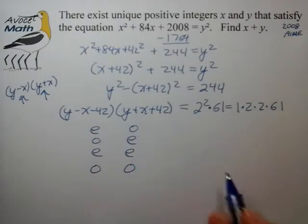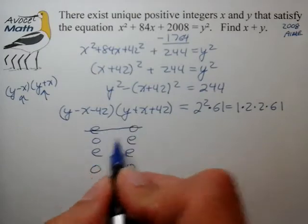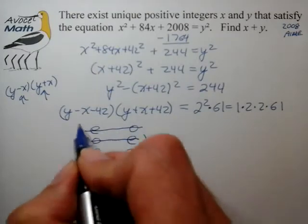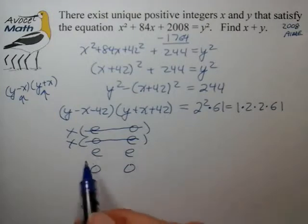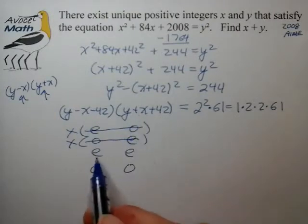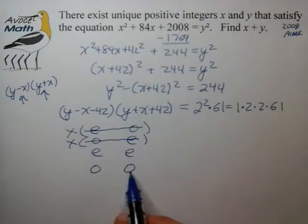So we know that these two numbers have to be of the same parity. They can either be even-even, or odd-odd. They cannot be even-odd. They cannot be odd-even. So we can eliminate these two from possibilities here. So we're left with the possibilities that these two factors can be of the form even-even or odd-odd. And we often describe that as the same parity.